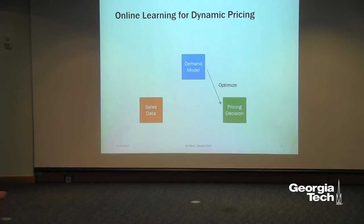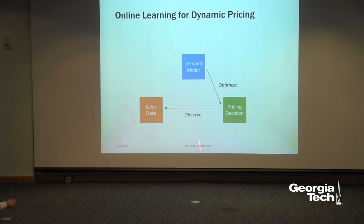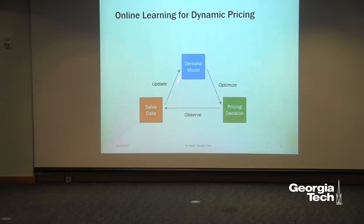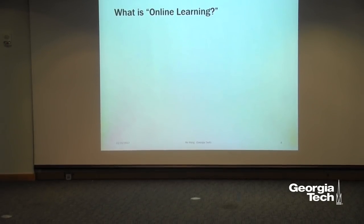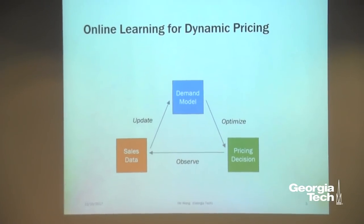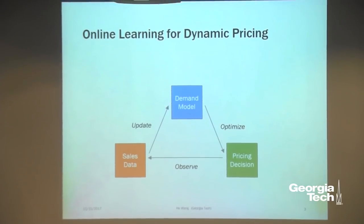As a first step, we use our demand model to make some pricing decisions. We offer the price to customers and observe the sales data — the actual transactions that happen. In a traditional sequential approach, that's the end of the story. But today we're going to add another step: once we collect the sales data, we include this new piece of information into our demand model. Our original model may not be accurate, but with this new information, we keep refining our model. Now we have a closed loop, and we use the new model for the next period, continuously cycling during our sales horizon.